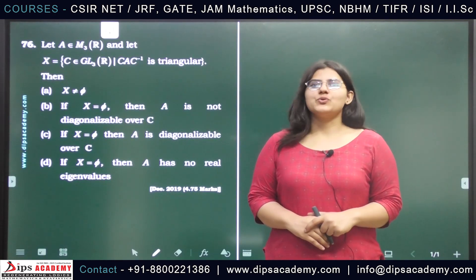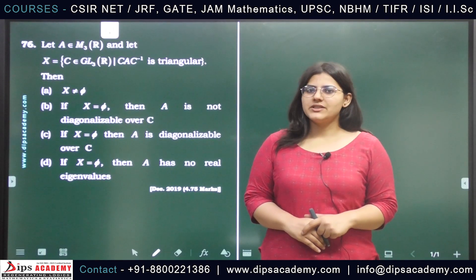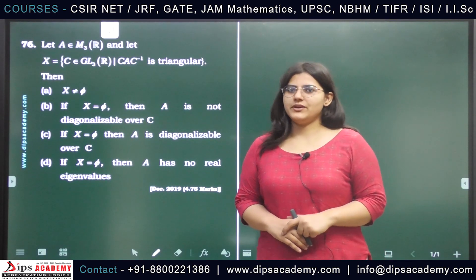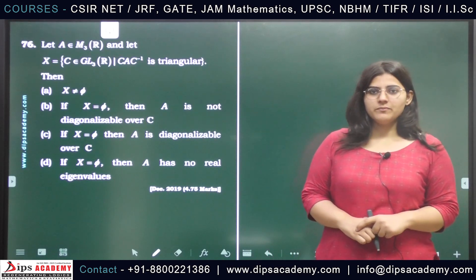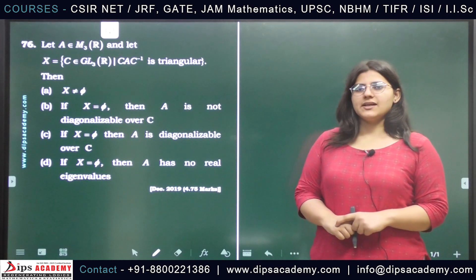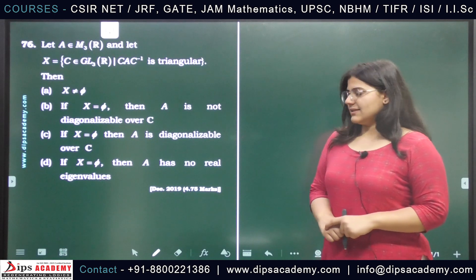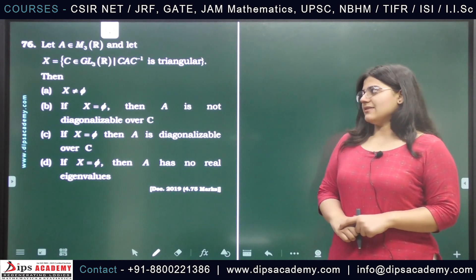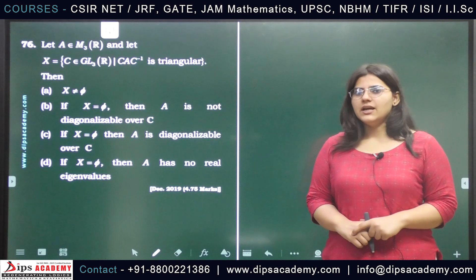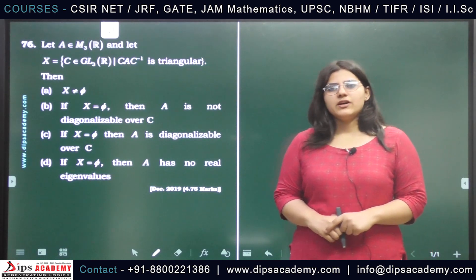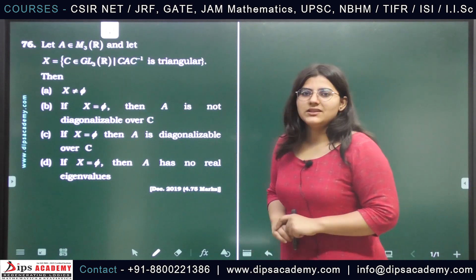Hello everyone, I am Tanujur and I welcome you all back to the question discussion series of Dips Academy. Today we are going to discuss a question from the CSIR NET 2019 examination. This is a question of linear algebra and it is a multiple select question from section C, so more than one option can be correct. Let us start with the question.